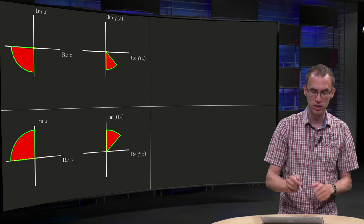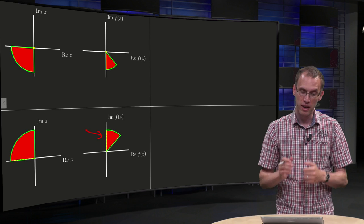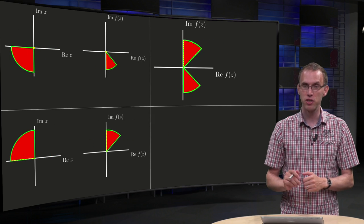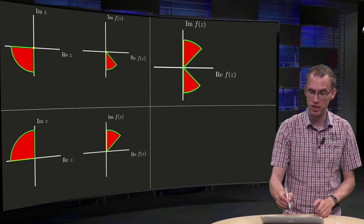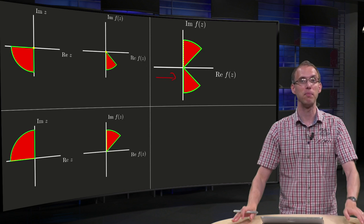And then you take the upper part, which is mapped to this part over here. Try this yourself. And if you combine them, you see your image of your region G now looks like this. So instead of an ice cream, now your image looks like Pac-Man.